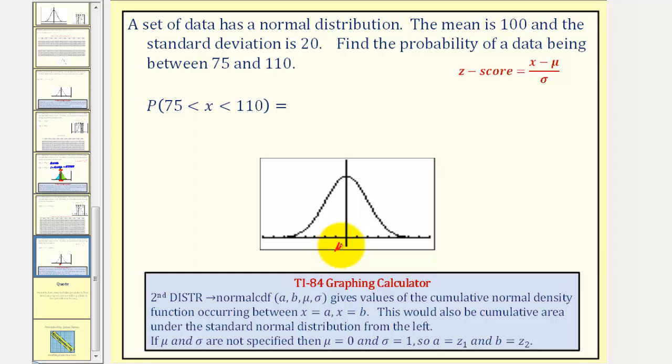So again, mu is equal to 100. 110 is one half a standard deviation above the mean, maybe somewhere in here. And X equals 75 is more than one standard deviation below the mean, maybe somewhere in here.